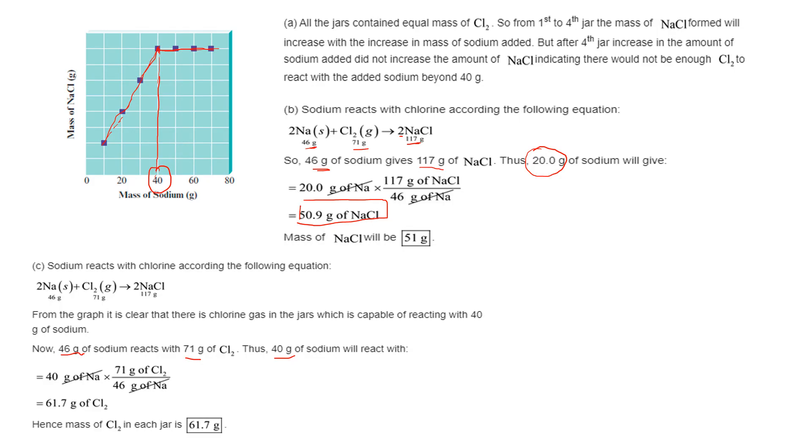We want to know 40 grams of sodium is going to react to total amount, so this is the mass of the chlorine in a jar.